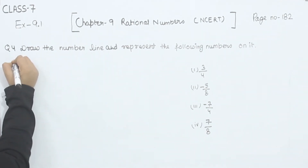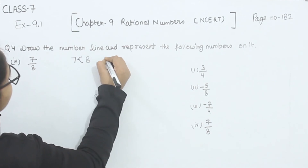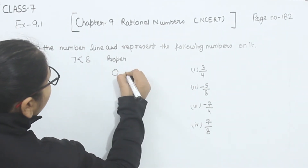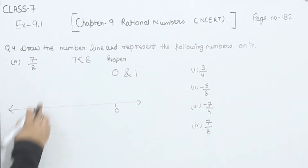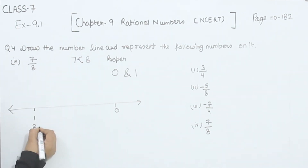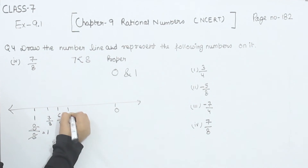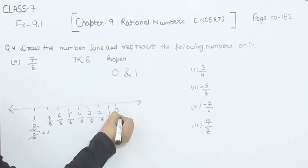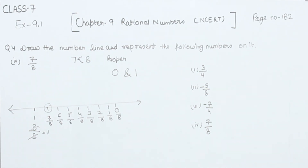Now comes part 4. In part 4, we have the value 7 by 8. The numerator is smaller than the denominator, so this is a proper fraction, and it lies between 0 and 1. Writing 0 and 1 on the number line — for 1, I write it as 8 by 8. Dividing the interval: 7 by 8, 6 by 8, 5 by 8, 4 by 8, 3 by 8, 2 by 8, 1 by 8, and 0 by 8. So this is the 7 by 8 on the number line. This is part 4. With this, we have completed question number 4. In the next video, we are going to start with question number 5.